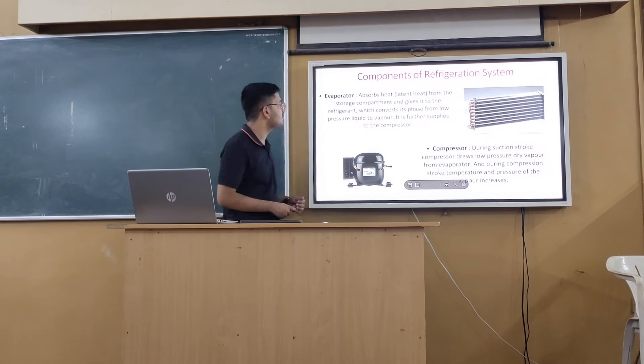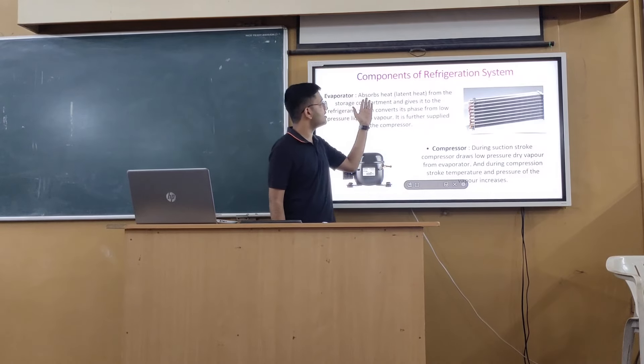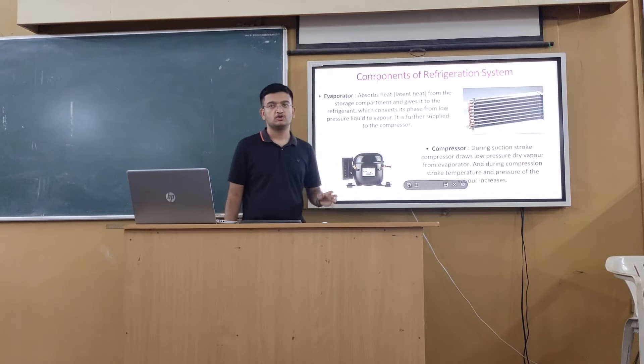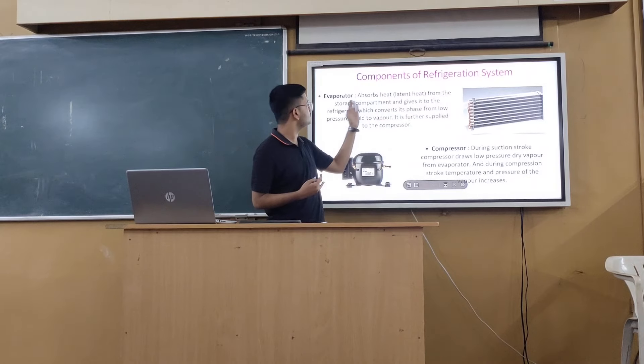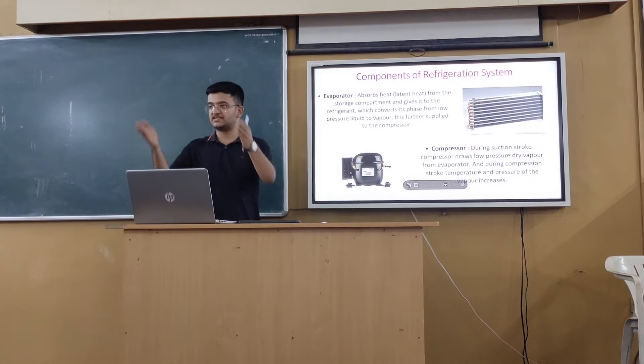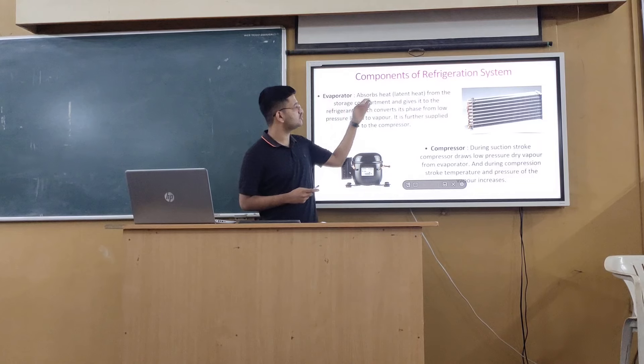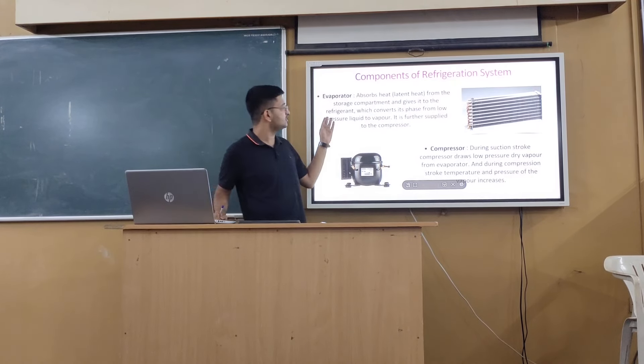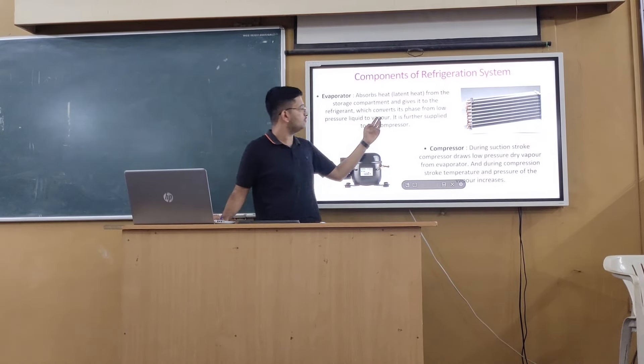The first is evaporator. What does evaporator do? Evaporator absorbs the heat from the storage compartment and gives it to the refrigerant. It absorbs the heat from storage compartment, which will be our room or the space inside your refrigerator. It absorbs the heat from there, creating the cooling effect.